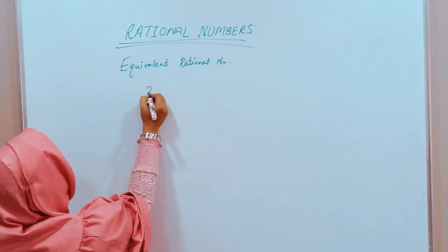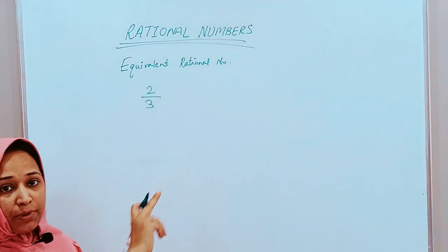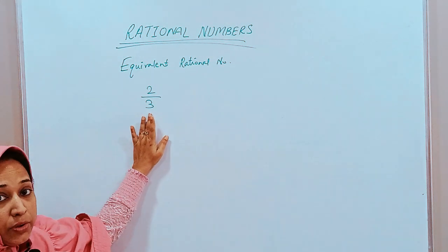If we have a number 2 by 3, 2 by 3 is a rational number, because it is in the form P upon Q, where Q is not equal to 0.